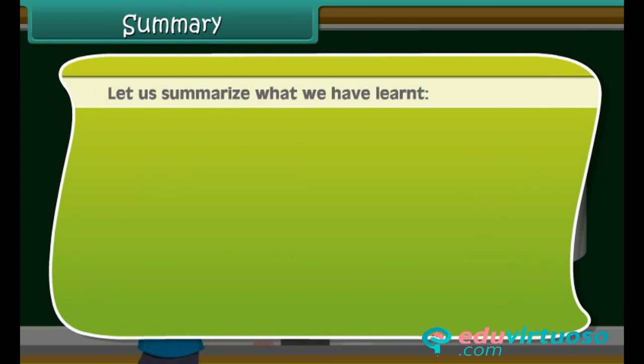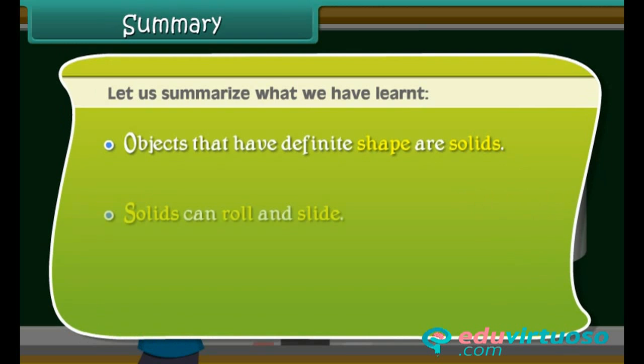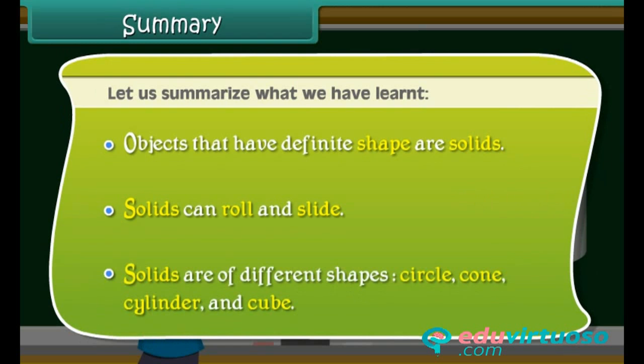Let us summarize what we have learnt. Objects that have definite shape are solids. Solids can roll and slide. Solids are of different shapes: circle, cone, cylinder and cube.